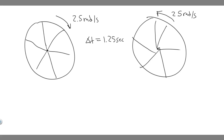In this problem, we're told a bicycle tire is spinning clockwise at 2.5 radians per second. During a time of 1.25 seconds, the tire is stopped and spun in the opposite direction, counterclockwise, also at 2.5 radians per second.